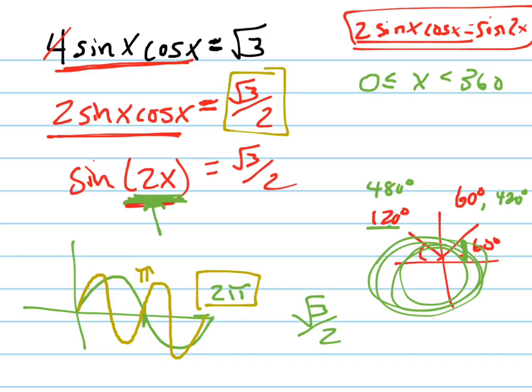Here's root 3 over 2, it's up here somewhere. It's going to hit it 1, 2, 3, 4 times instead of just 2 times, which was the original.